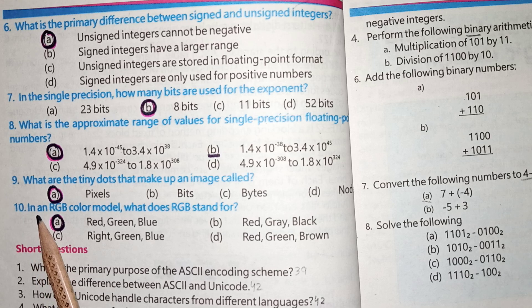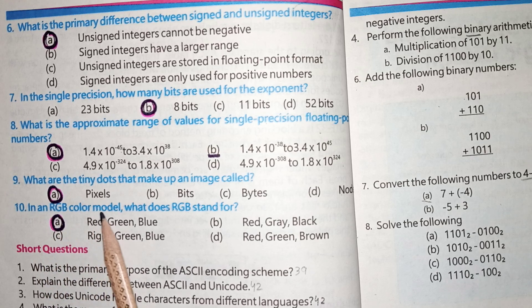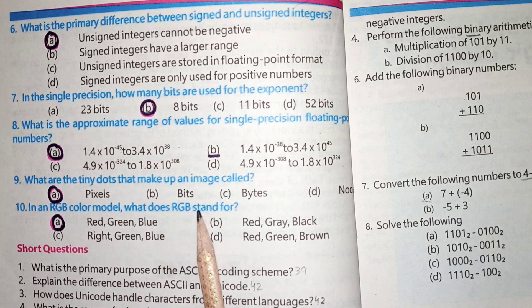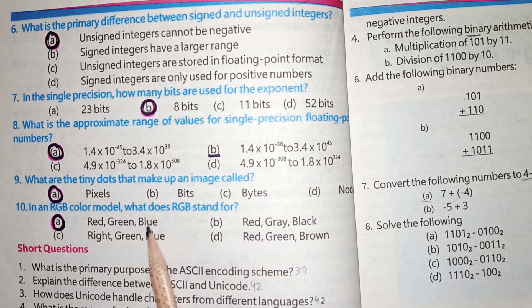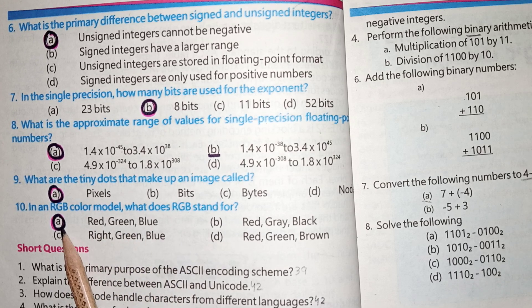Next, MCQs No. 10 is, In an RGB color model, what does RGB stand for? RGB stands for Red, Green, Blue. Option A is the correct option.